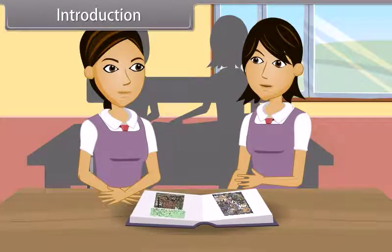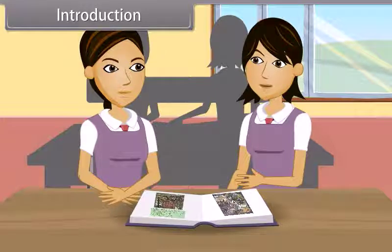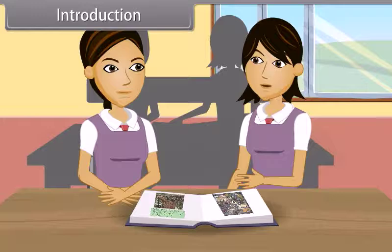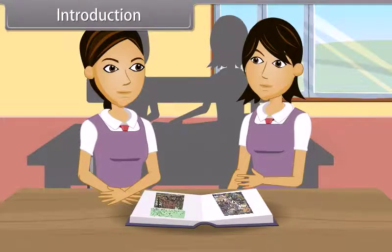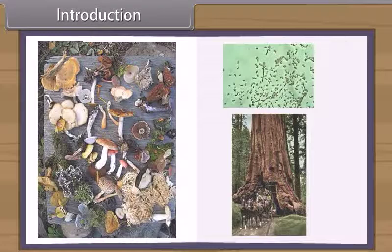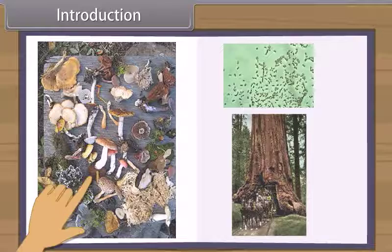We all see a wide variety of plants and animals around us. There are more than 1 million species of animals around the whole earth and about half a million species of plants on earth.